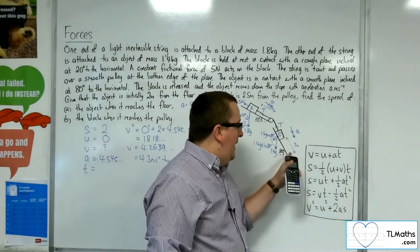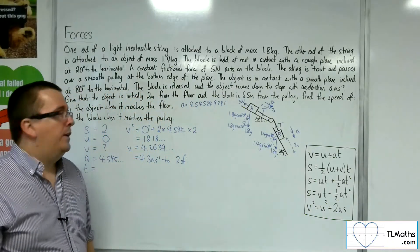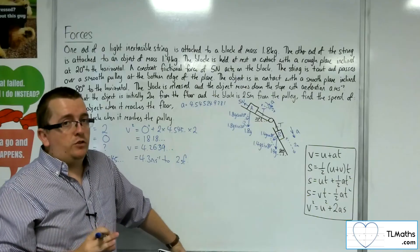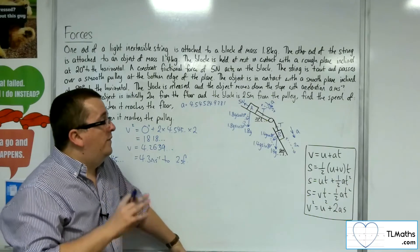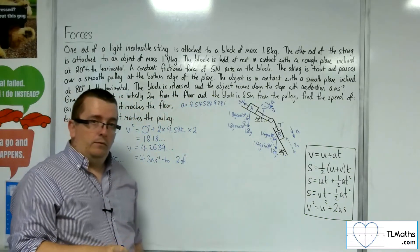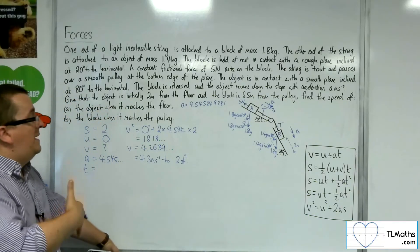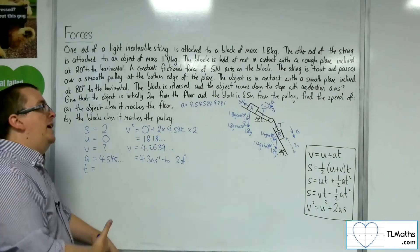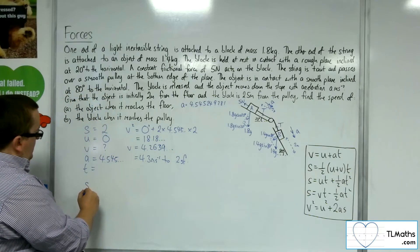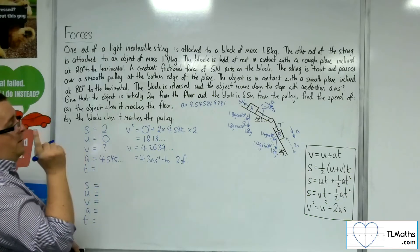Now at the point that B hits the ground, A is also traveling at that speed. However, when B hits the ground, there is no tension in the string anymore. That means A is just traveling under its own weight. So we need to consider at that point there's going to be a different acceleration. It's going to be accelerating at a different rate.